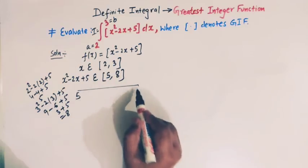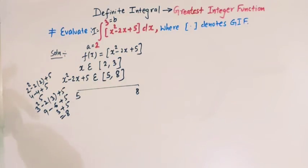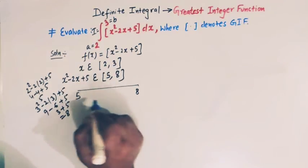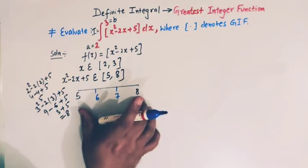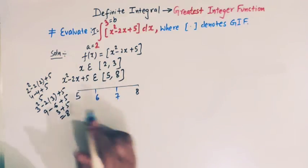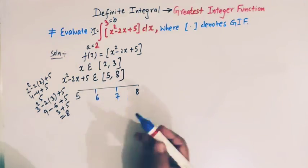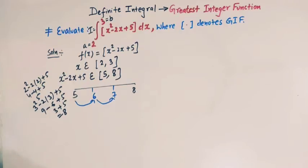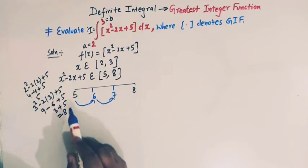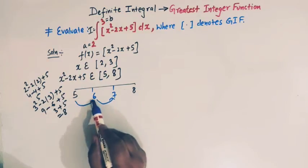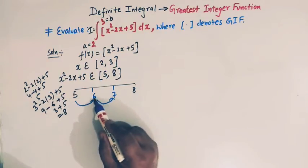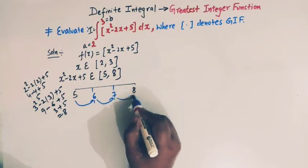Expressing this interval on the number line, we have 5 and 8, and there are two integers 6 and 7 which lie between 5 and 8. So we can break this function into three intervals: from 5 to 6, 6 to 7, and 7 to 8.